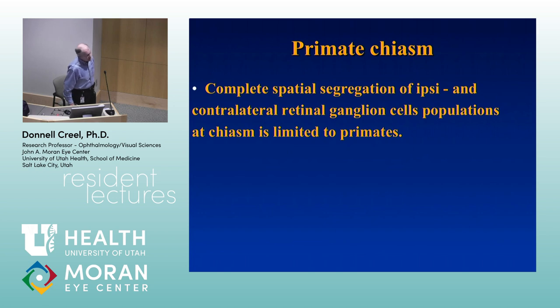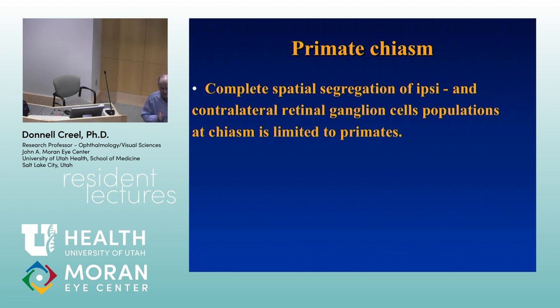The visual system as we think of it is only in primates, where fibers temporal to the fovea don't cross, and fibers nasal to the fovea do cross. That's only in primates. In lower vertebrates and lower mammals, it's sort of random — fibers come from all over the retina and are in the nerve in random variation, with no segregation of crossed and uncrossed fibers.